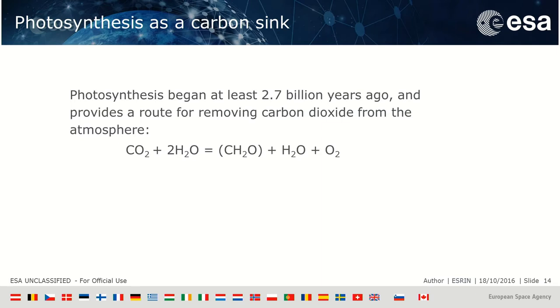Photosynthesis is important because it's a way of removing CO2 from the atmosphere by this reaction. This is the one that actually generates our oxygen, most of which comes from the ocean eventually. This is one of the primary ways in the natural carbon cycle in which we remove carbon dioxide from the atmosphere.